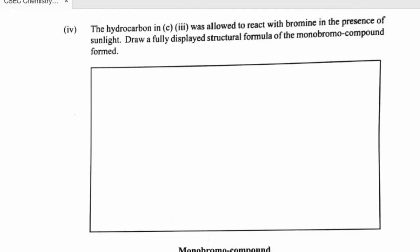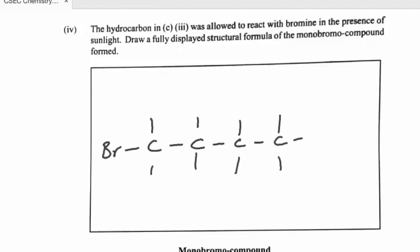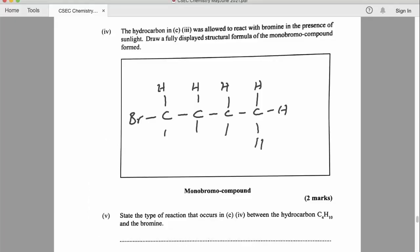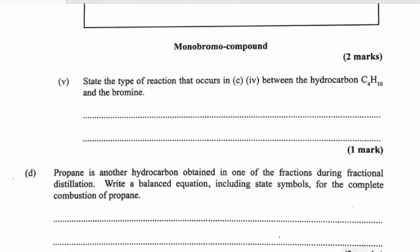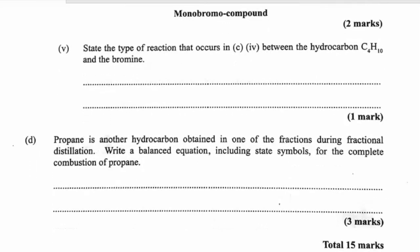The hydrocarbon C₄H₁₀ was allowed to react with bromine in the presence of sunlight. For the fully displayed structural formula of the monobromo compound formed, we take C₄H₁₀, remove one hydrogen, and replace it with one bromine — the bromine can go anywhere on the chain. The type of reaction that occurred between C₄H₁₀ and bromine is a substitution reaction.